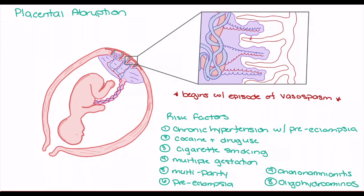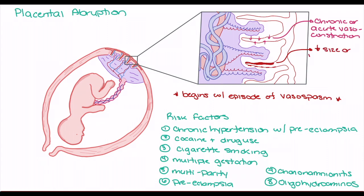Three core vascular changes lead to susceptibility to rupture during vasospasm. First, chronic hypertension with preeclampsia, cocaine and sympathomimetic use, and cigarette smoking increase the risk of vasoconstriction, putting blood under higher pressure and turbulence, increasing the potential for vessel wall destruction and rupture. Second, these factors increase the potential for fibrosis or scarring of the endothelial tissue, damaging wall integrity and decreasing space for blood flow, further increasing turbulence and pressure. Finally, many of these factors increase the chance of vessel inflammation, leading to further decreased integrity and a higher chance of rupture.